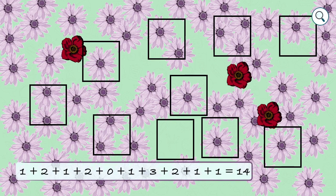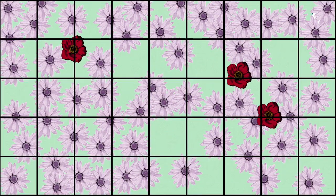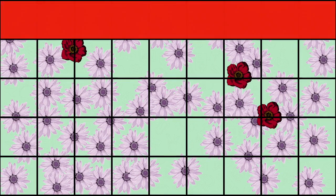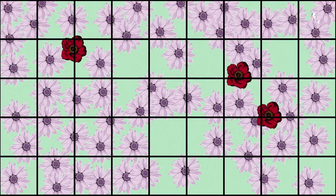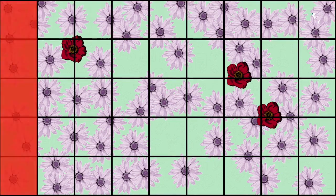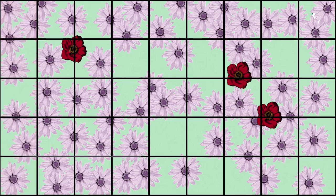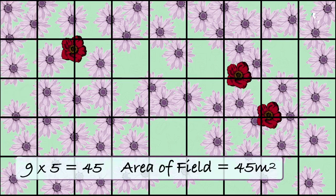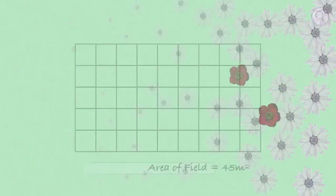If I add all the different quadrats together it will total 14. So I have sampled 14 flowers from this field. This field is 9 meters by 5 meters. To work out the area of the field we multiply 9 by 5. 9 multiplied by 5 is 45. So the area of the field is 45 meters squared.